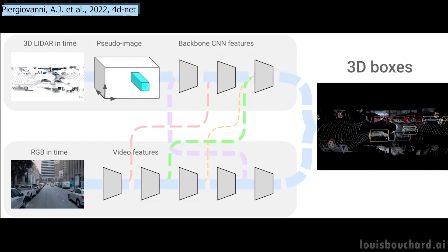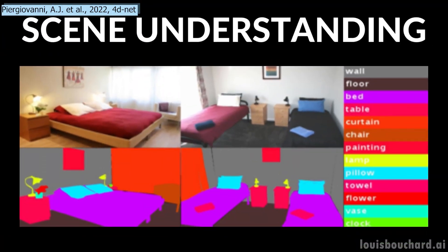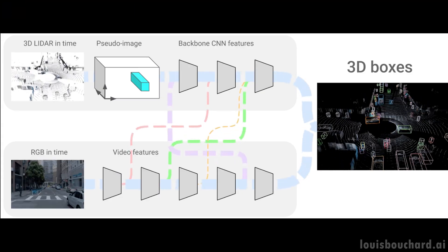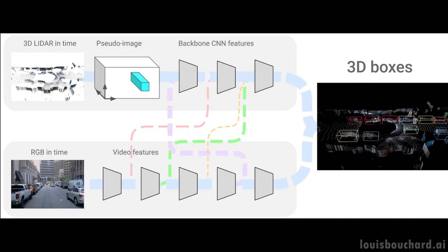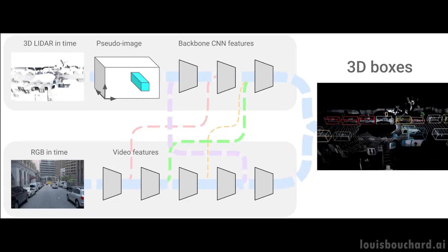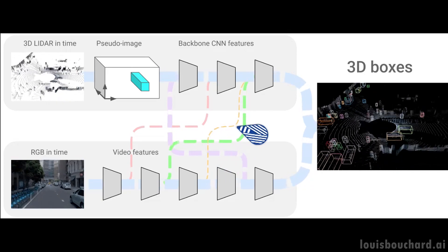We call this task scene understanding and it has been widely studied in computer vision and has seen many advancements with the recent progress of the field and machine learning algorithms. It's also crucial in self-driving vehicles where we want to have a near-perfect comprehension of the scenes. Here, you can see that the two networks always talk to each other with connections.